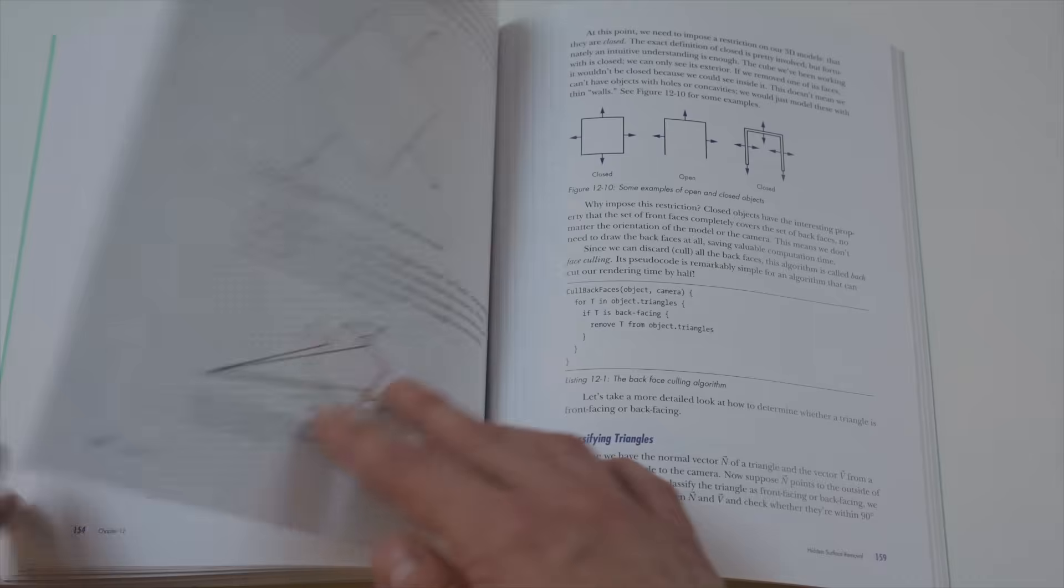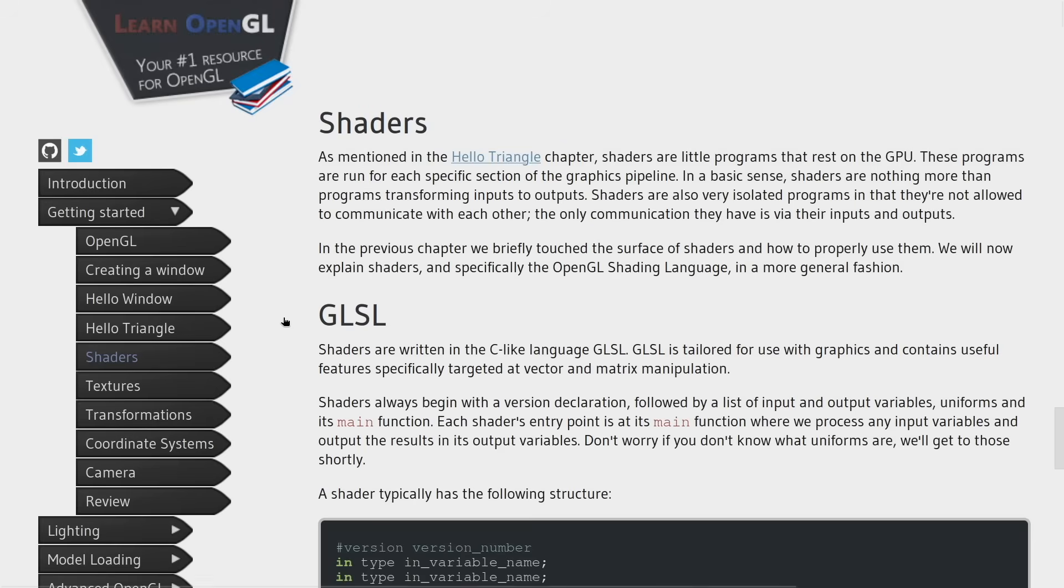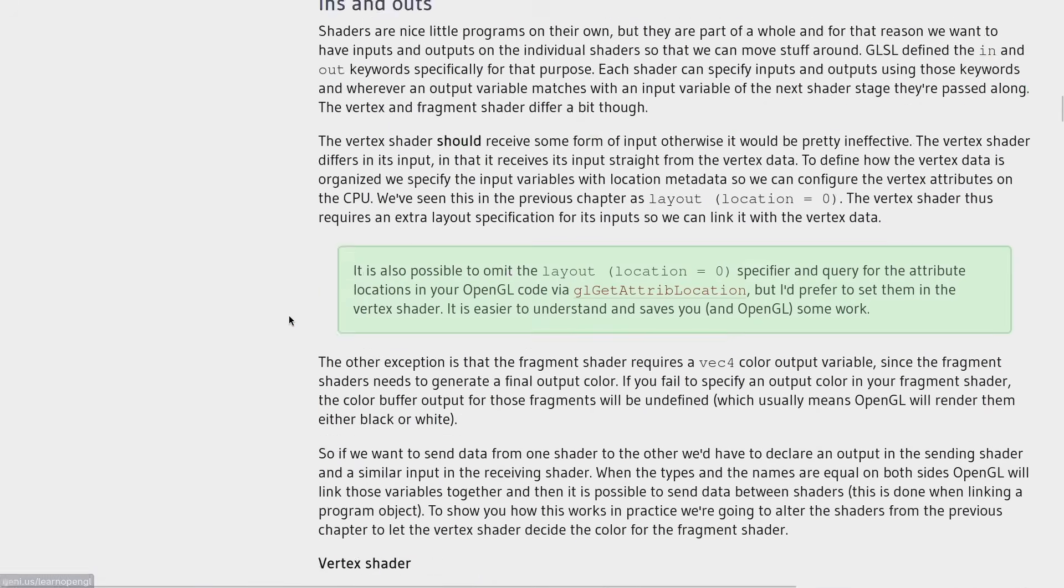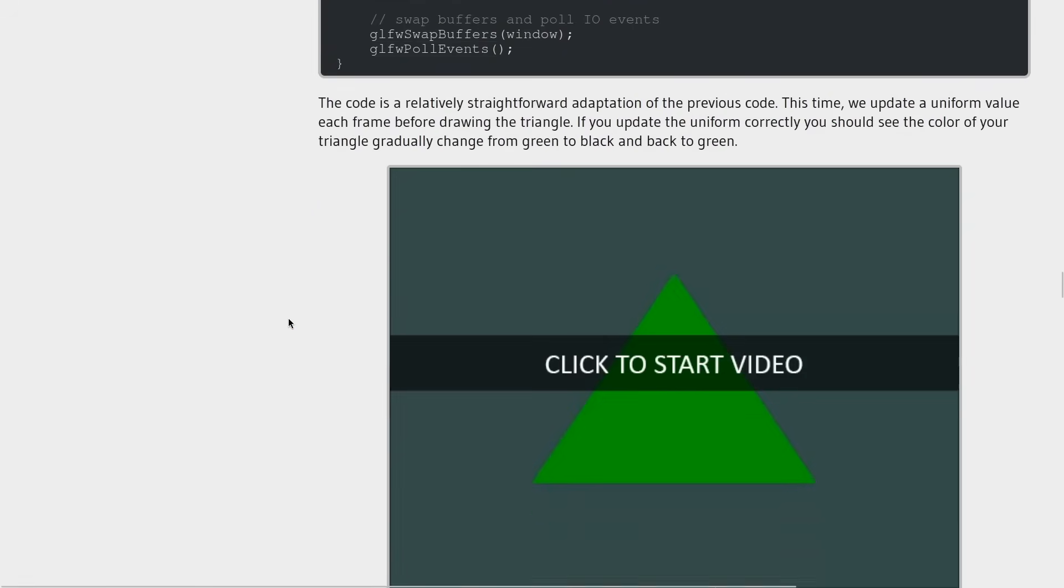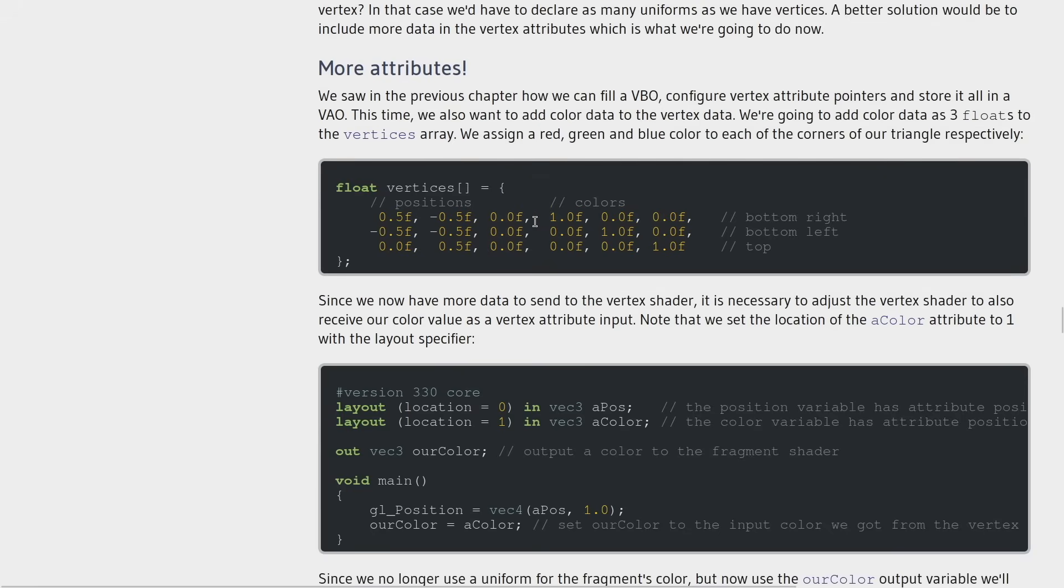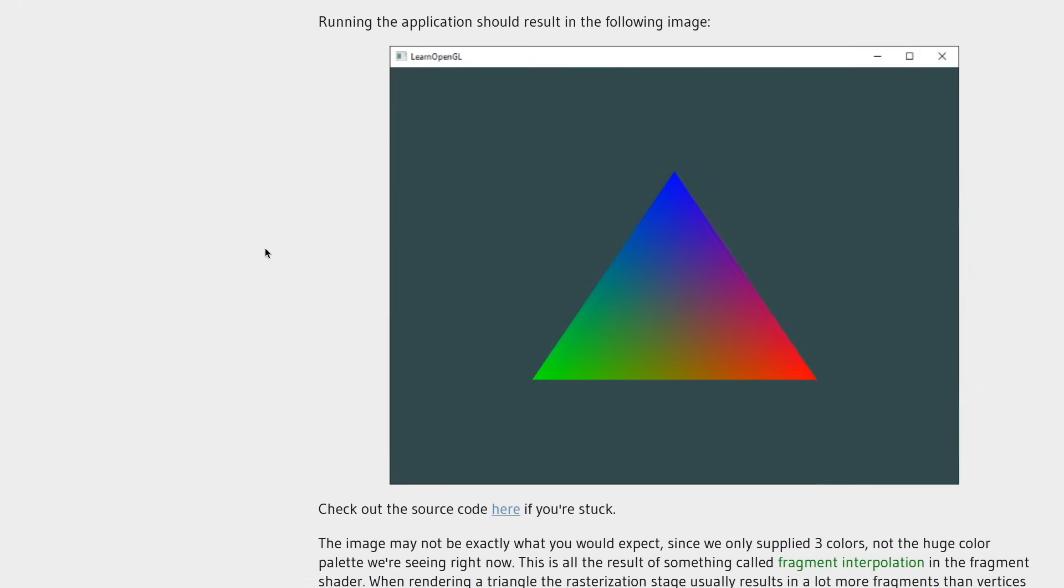Another part that's confusing to OpenGL beginners is interpolation in triangle shading. That's the famous example where we provide just three colors for the triangle vertices, and OpenGL renders every possible color in the middle, resulting in a colorful gradient. The math behind this is explained in the book in the shading chapter. After reading it, you will have a very clear understanding of what's going on behind the scenes.